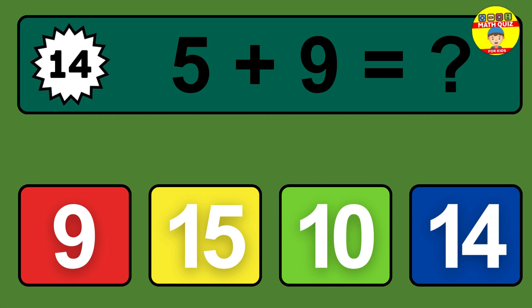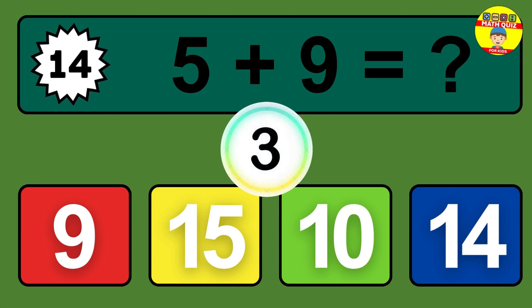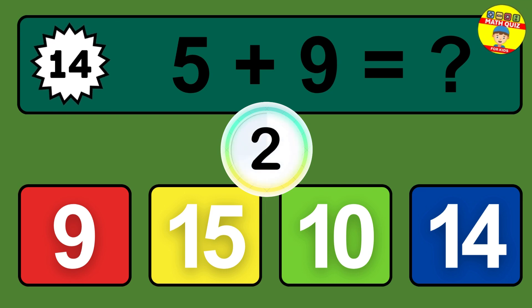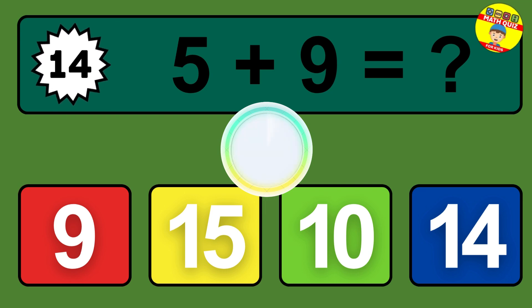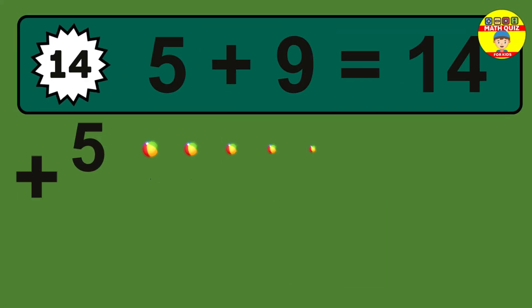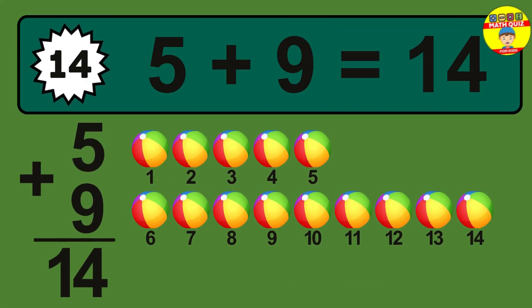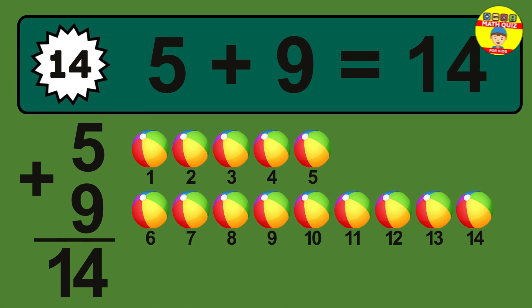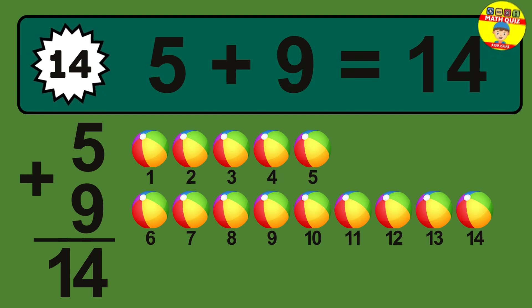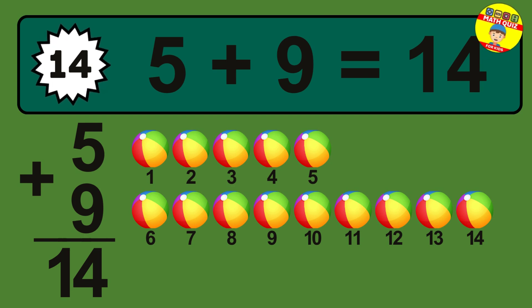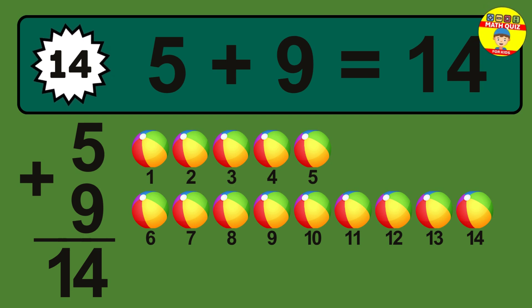Question 14. 5 plus 9 equals what? The answer is 5 plus 9 is 14. Let's count it: 1, 2, 3, 4, 5, 6, 7, 8, 9, 10, 11, 12, 13, 14.